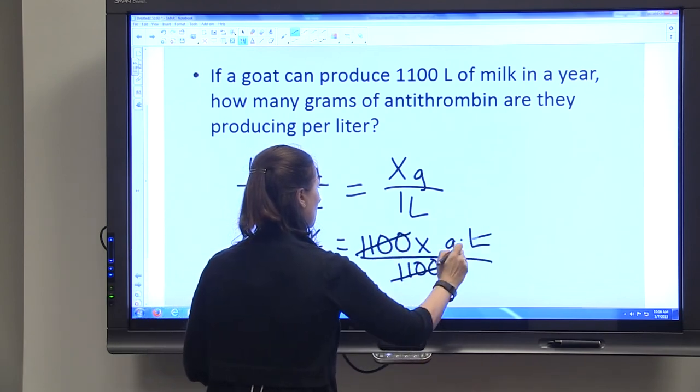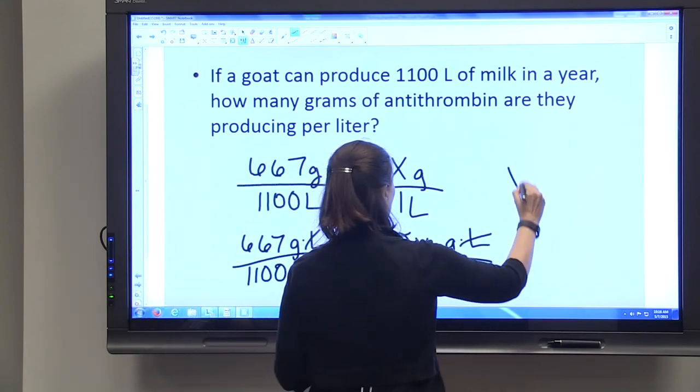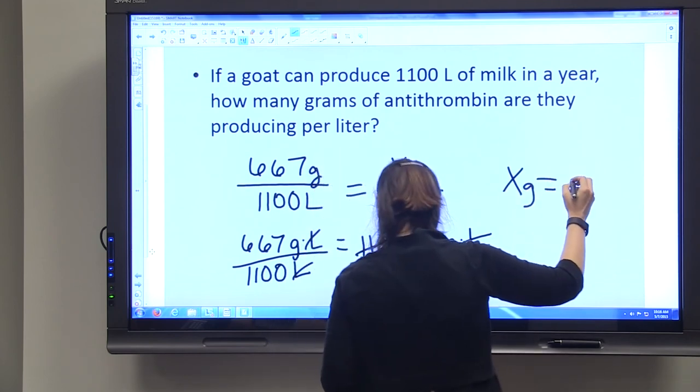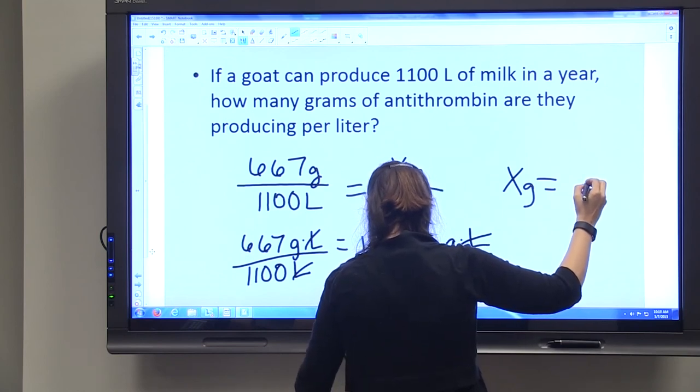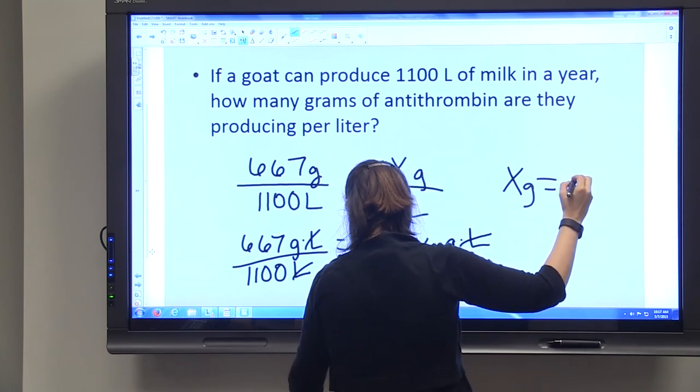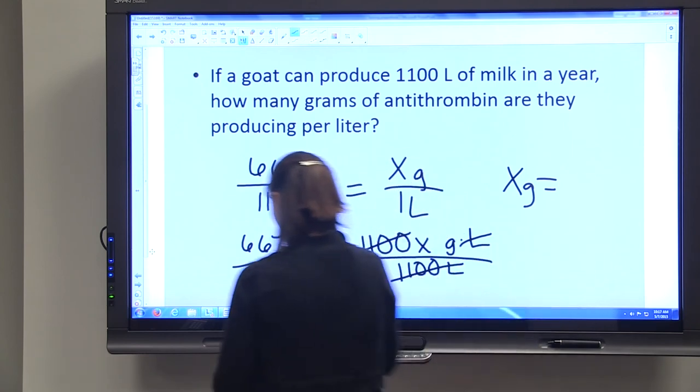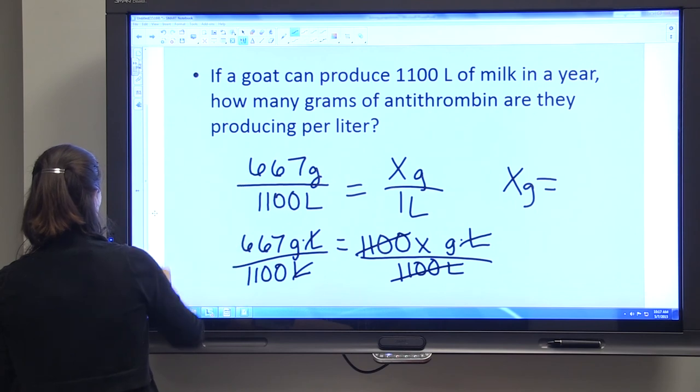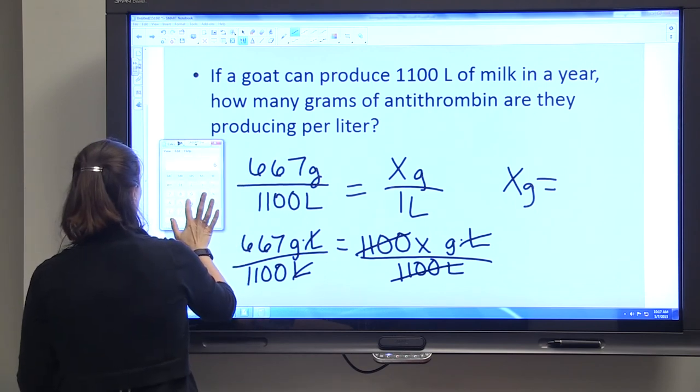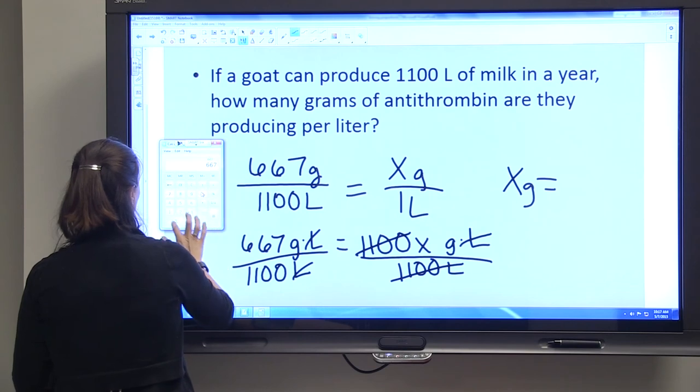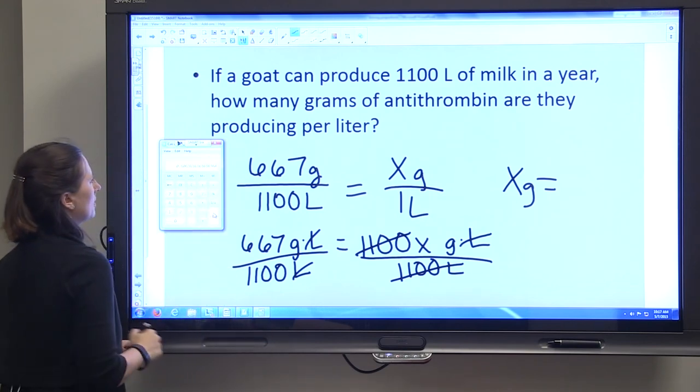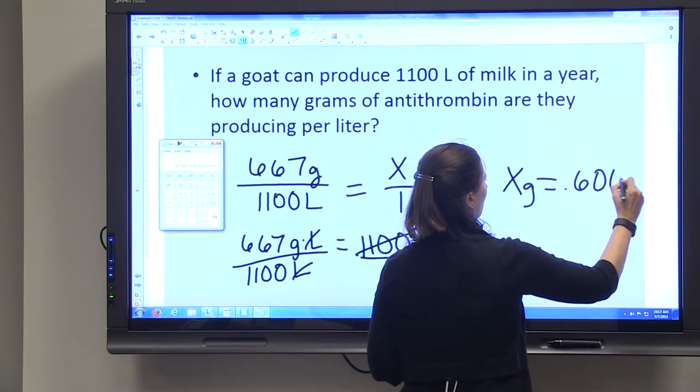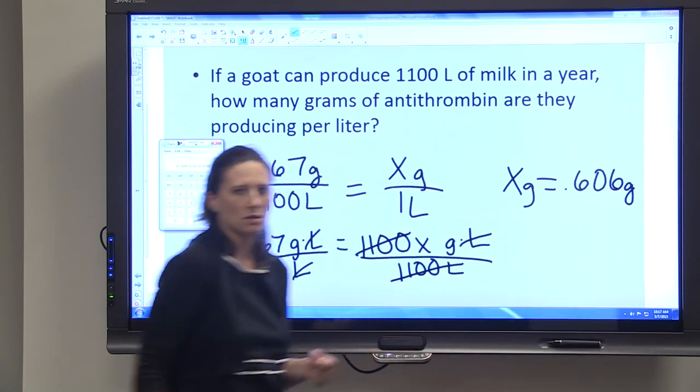We'll have x grams equals... we're going to get my calculator: 667 divided by 1100 equals 0.606 grams.